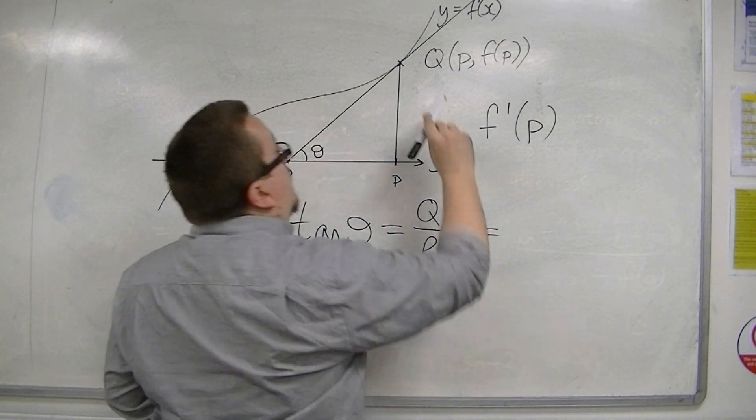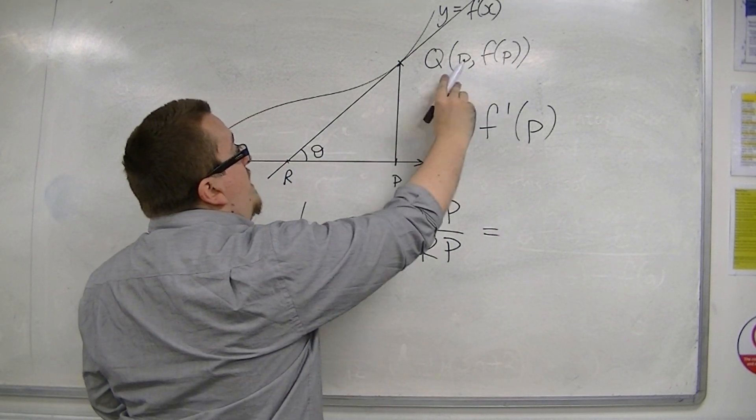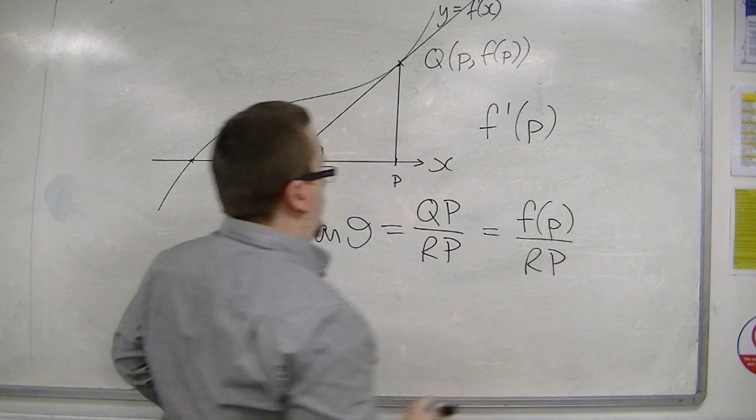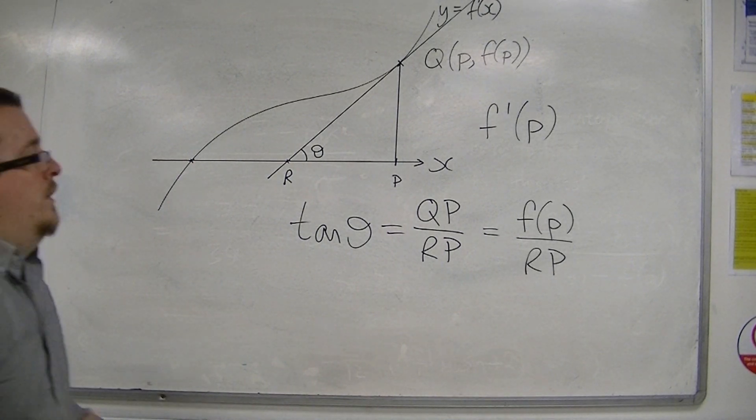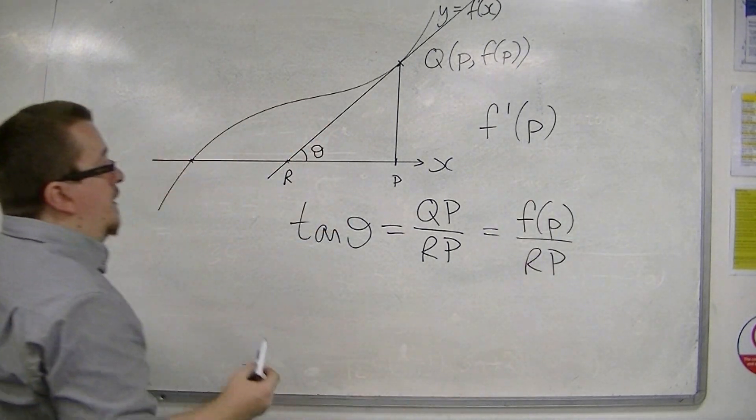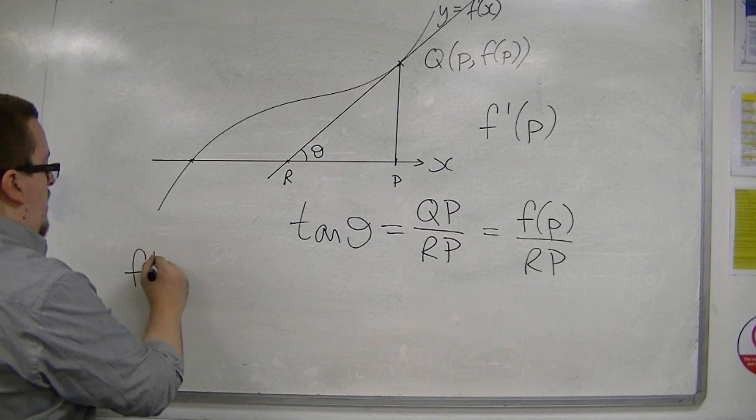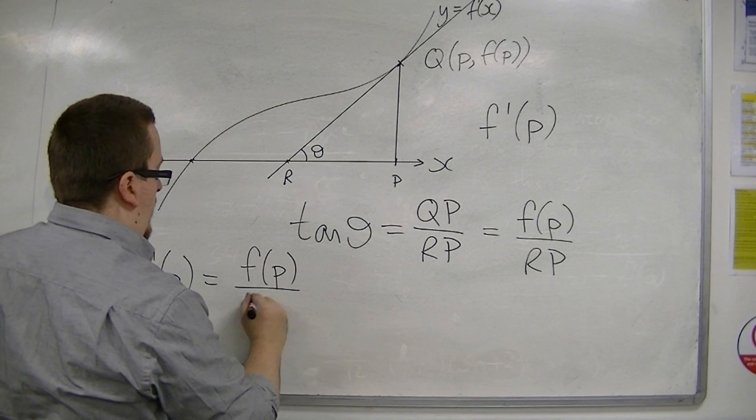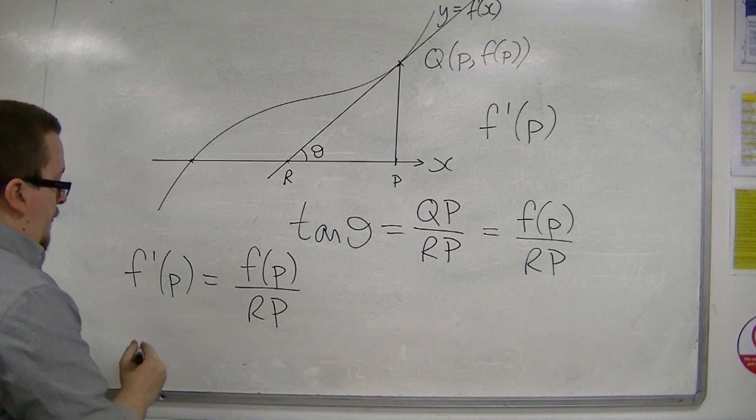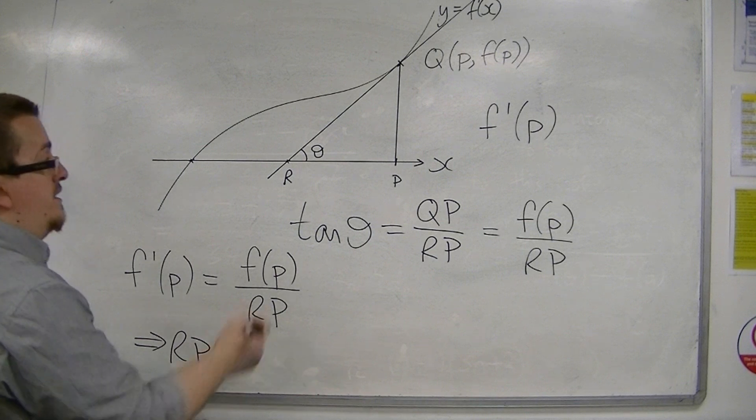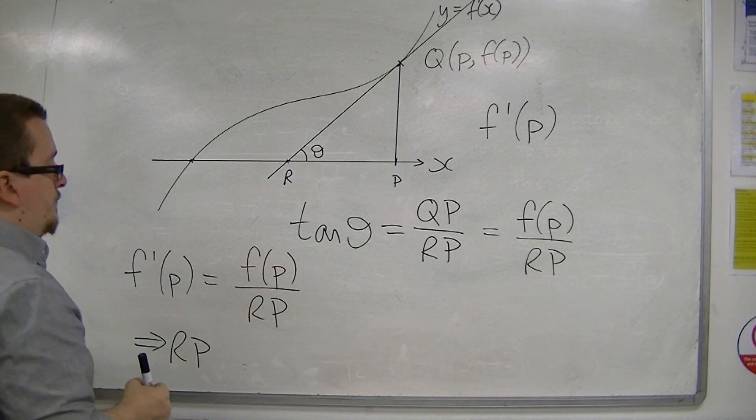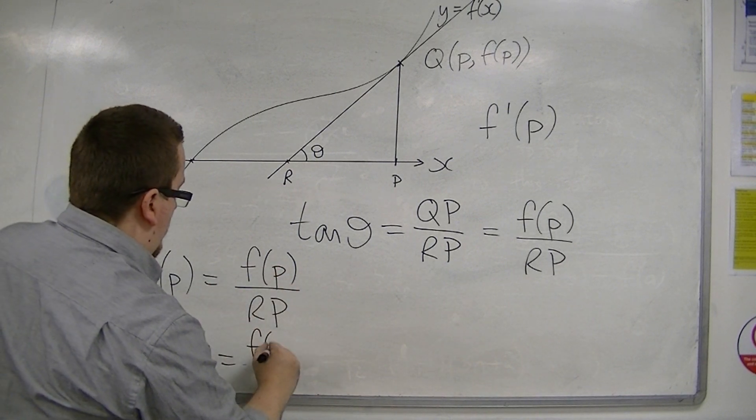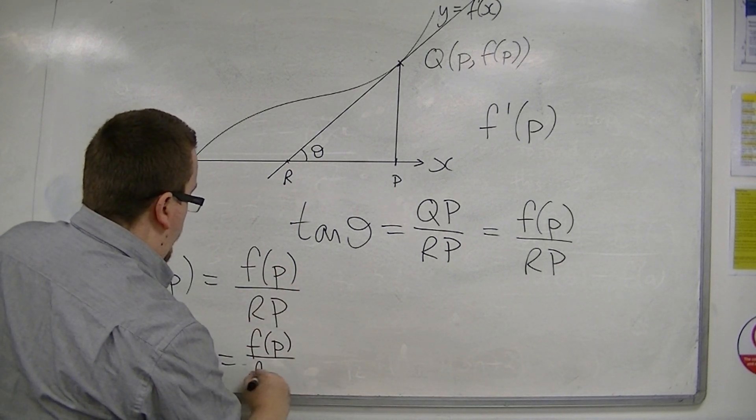Now the reason why I can do that is because tan theta is the opposite divided by the adjacent. It's the difference in the y-coordinates divided by the difference in the x-coordinates. But QP, that length, I know to be f of P. And if these two things are the same, I can say that f prime of P is equal to f of P over RP. So if I've rearranged that, that means that the distance RP is equal to f of P divided by f prime of P.